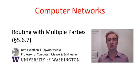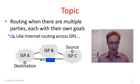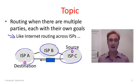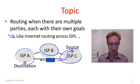G'day viewers. In this segment we'll talk about routing when there are multiple parties in the network. This formulation for routing is very much like the internet in which we work. The network is comprised of multiple parties — in the internet, these are the ISPs. Each of these parties might have its own goals, its own idea about what would be a good route, yet somehow they all need to work together to get traffic from a source to a destination across the network.